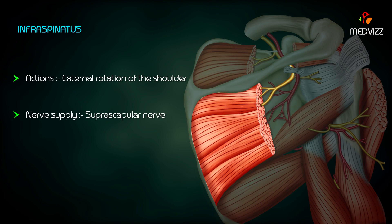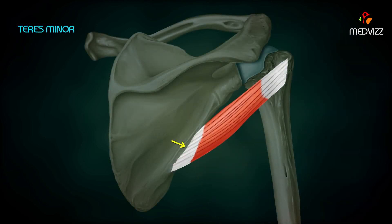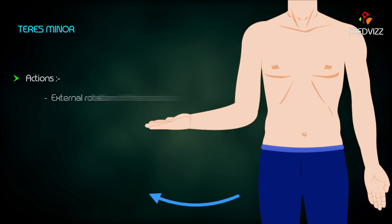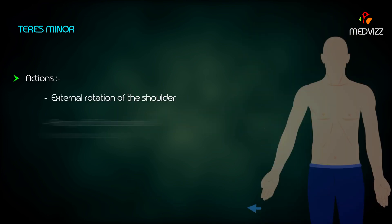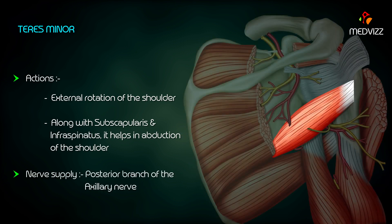Nerve supply of infraspinatus is by the suprascapular nerve. Teres minor: It originates at the upper two-thirds of the lateral border of the scapula. It passes upwards and laterally and inserts into the lowest impression of the greater tubercle of the humerus. Its actions are external rotation of the shoulder and, along with subscapularis and infraspinatus, it helps in the abduction of the shoulder. Nerve supply is by the posterior branch of the axillary nerve.